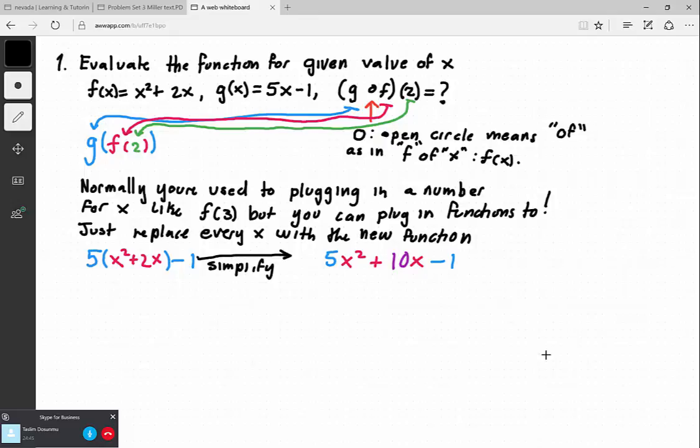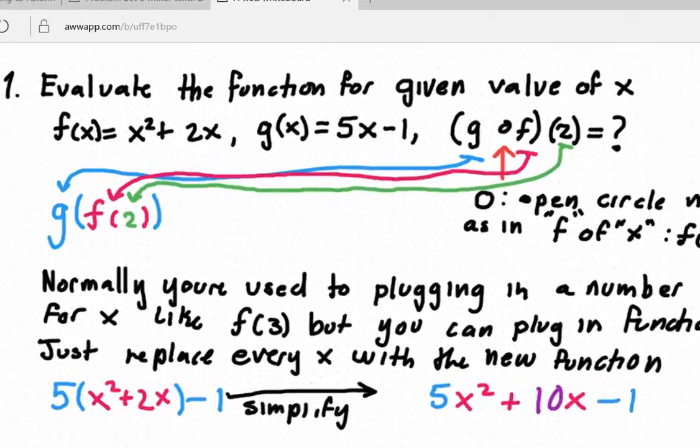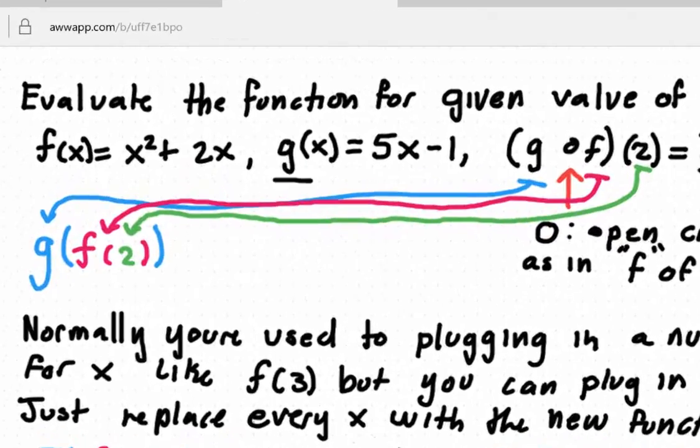A composite function is when you have one function inside of another. In this case, you have your g of x and you have your f of x, and you have to combine them the way that the problem is asking you.